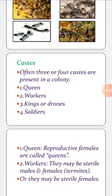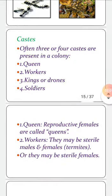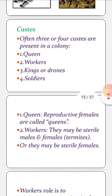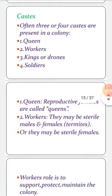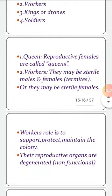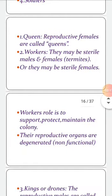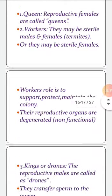Queen: the reproductive females are called queens. Workers: they may be sterile males and females in termites, or they may be sterile females. Workers' role is to protect, support, and maintain the colony. Their reproductive organs are degenerated, that is non-functional.